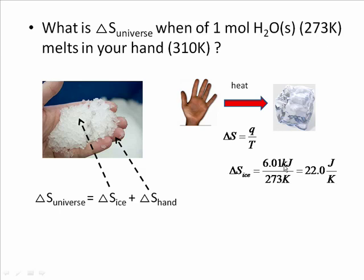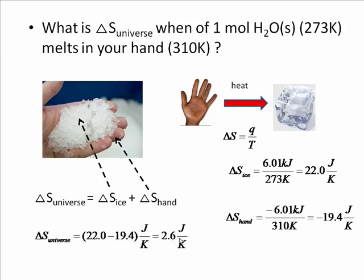So 6.01 kilojoules of heat has to flow if we're going to melt a mole of ice. So delta S for the ice is 6.01 kilojoules divided by the temperature of the ice, 273 Kelvin, and that turns out to be 22 joules per Kelvin. I switched from kilojoules to joules in this calculation. And similar calculation would be done to find the change in entropy for the hand. So it loses the heat, so it's got a negative sign, negative 6.01 kilojoules divided by its temperature, which is 310 Kelvin, negative 19.4 joules per Kelvin.